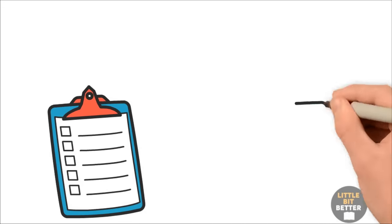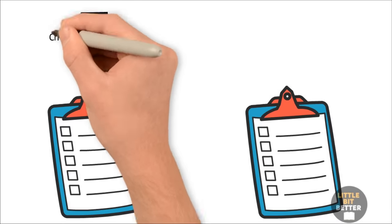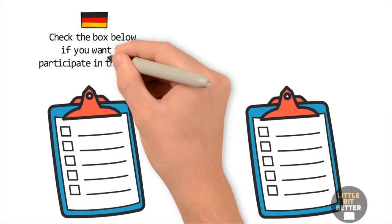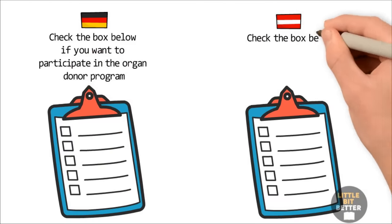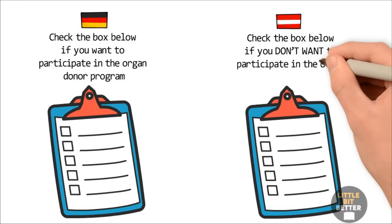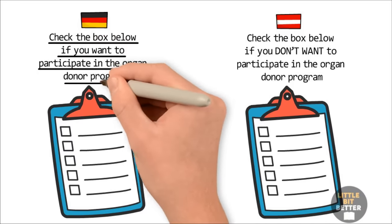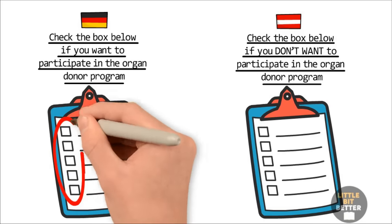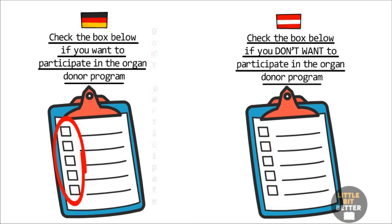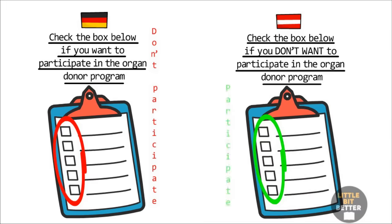Well, it turns out it's because of the way the question was asked in the survey form. In Germany, the form said, check the box below if you want to participate in the organ donor program. In Austria, the form said, check the box below if you don't want to participate in the organ donor program. So what is happening here? It's basically the same question, framed a little differently. In both countries, the majority of people did not check the box. But in Germany, when you don't check the box, you don't participate. But in Austria, when you don't check the box, you automatically participate.